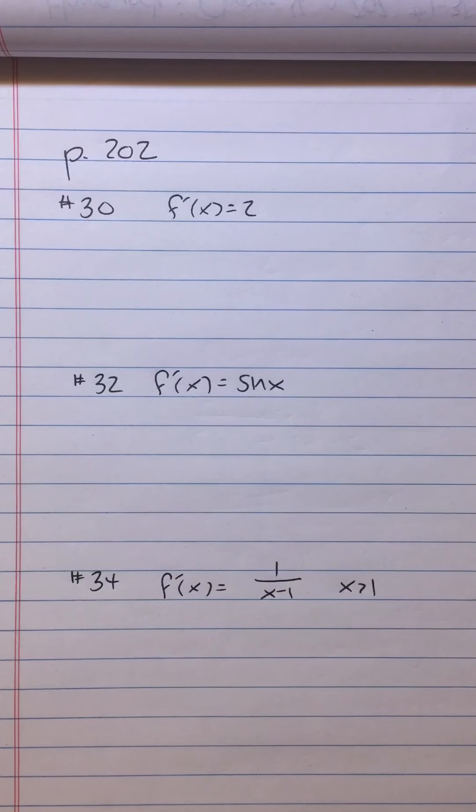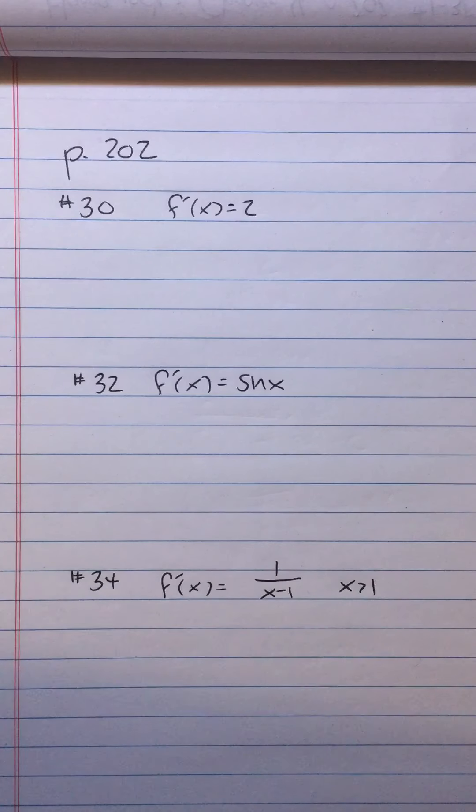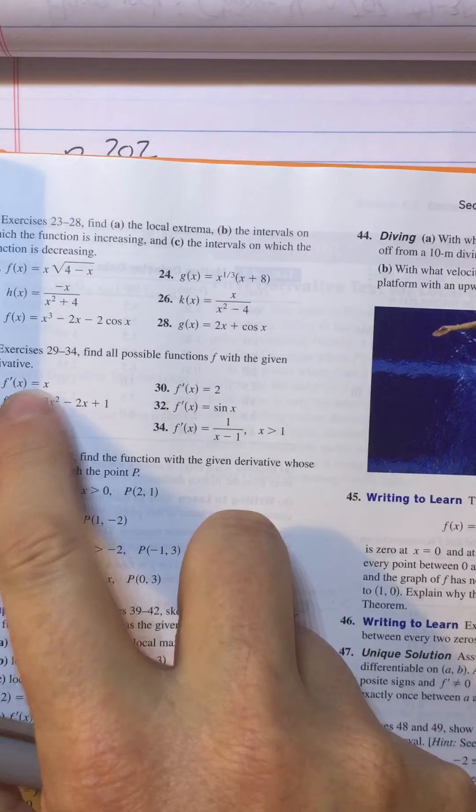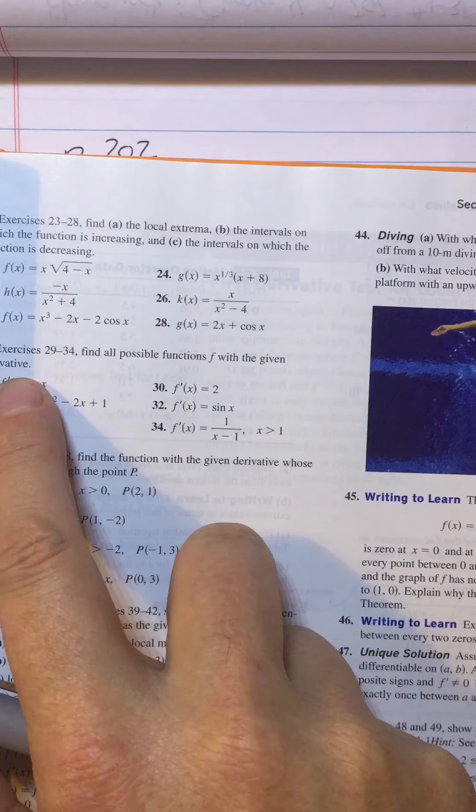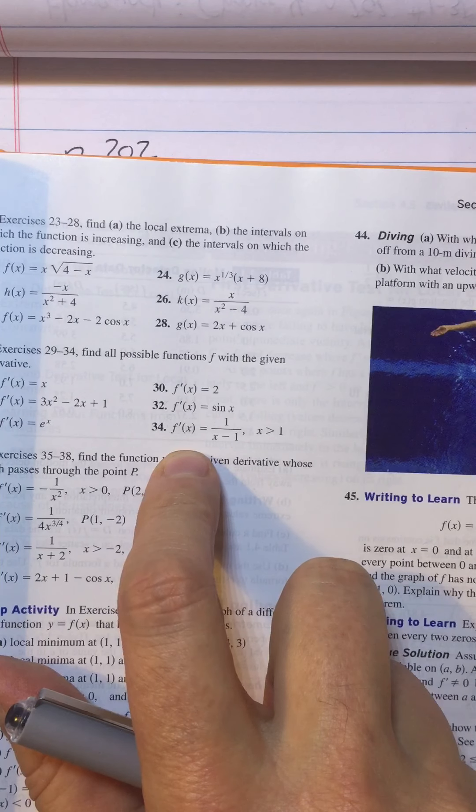The last thing you have on page 202 is important because it's a foreshadowing of things to come. In this section of the homework, they say find all possible functions f with the given derivative. They're telling you what f prime is, and you have to come up with what f is.